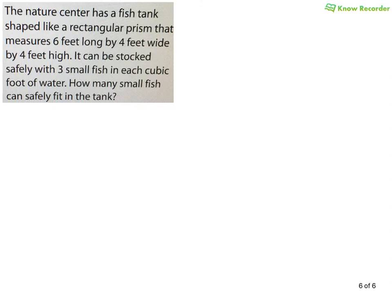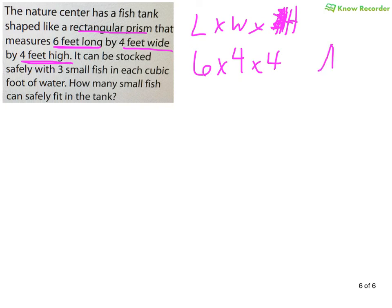Finally, sometimes you don't get a picture. Sometimes you have to read. Let's talk about key words. A nature center has a fish tank shaped like a rectangular prism. I'm not even going to draw it. It measures six feet long. Oh, isn't that a length? Long, right? Sure. It measures four feet wide. Oh, W, right? Yeah, look at these letters, they work. And four feet high. Oh boy, look at that. So it can be stocked safely with three small fish in each cubic foot of water. So now they're giving me a unit rate. So first things first, let's figure out the volume of this tank. Well, six times four is 24.